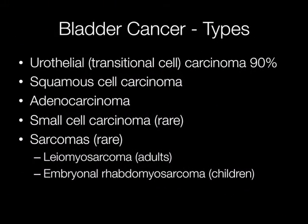Other types of pure bladder cancer include squamous cell carcinoma, adenocarcinoma, and rarely small cell carcinoma. Very occasionally, sarcomas may arise in the bladder. In adults the most frequent type of sarcoma is leiomyosarcoma, which is a malignant tumour of smooth muscle, and in children the most frequent type of sarcoma is embryonal rhabdomyosarcoma, which is a malignant tumour of striated muscle.